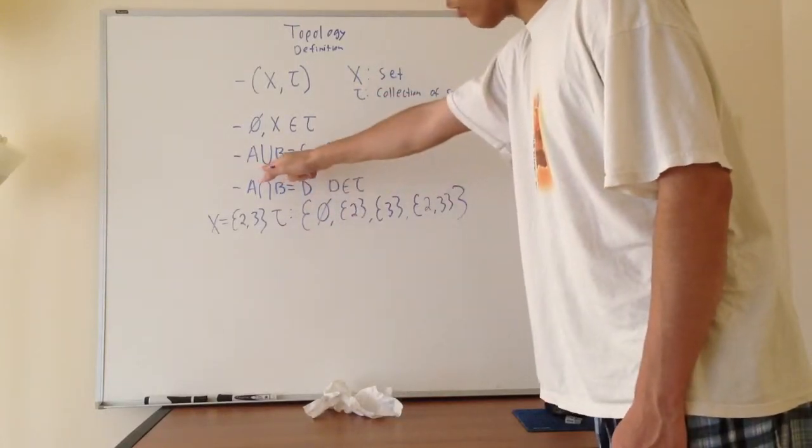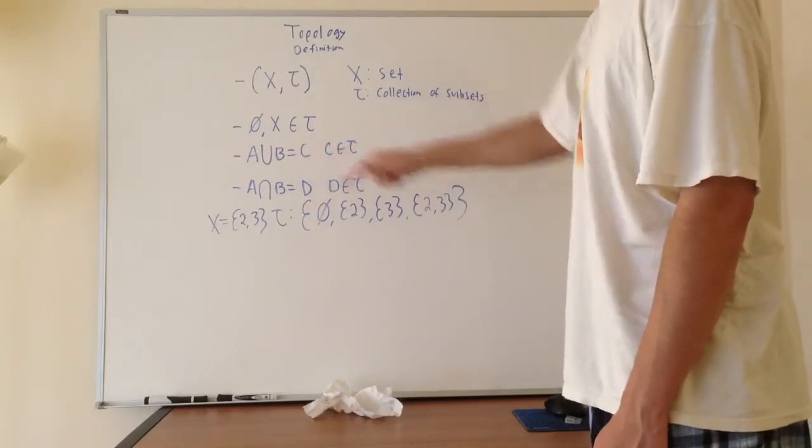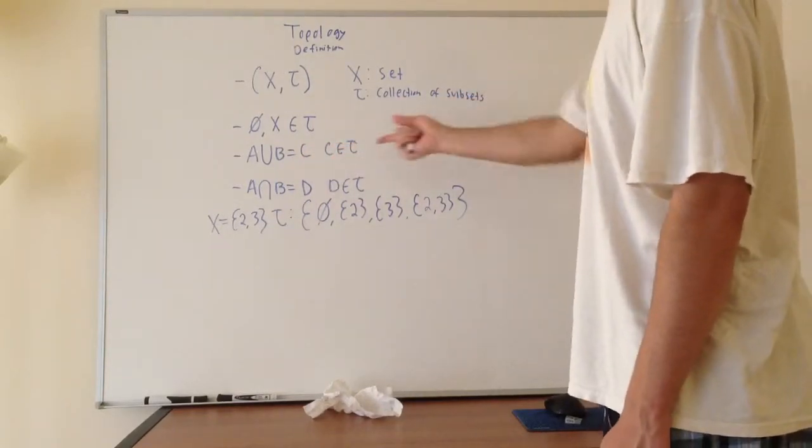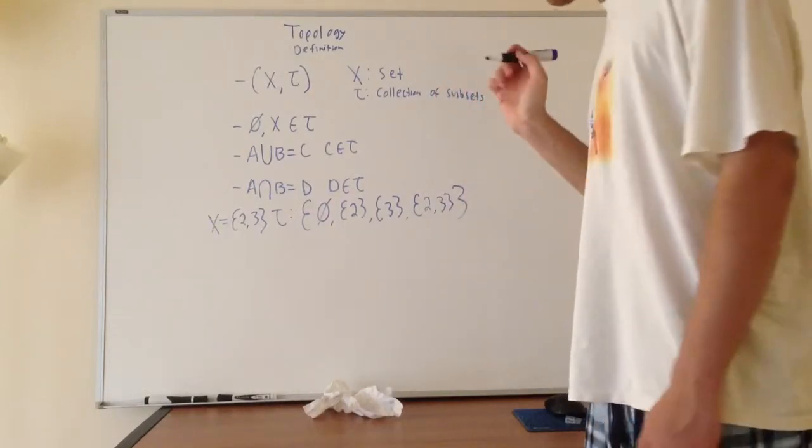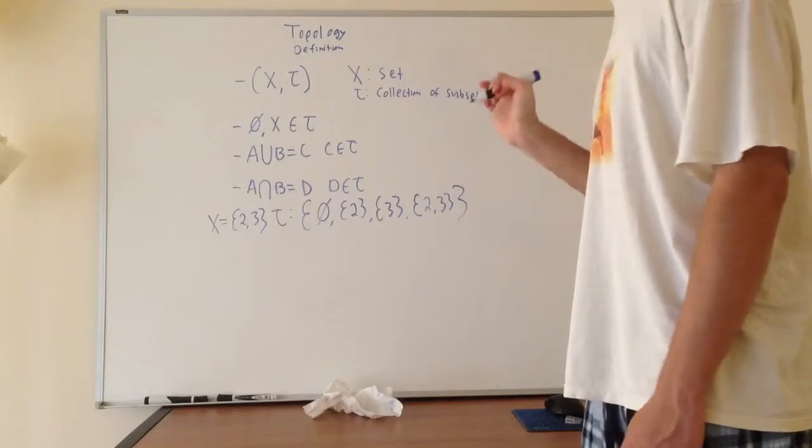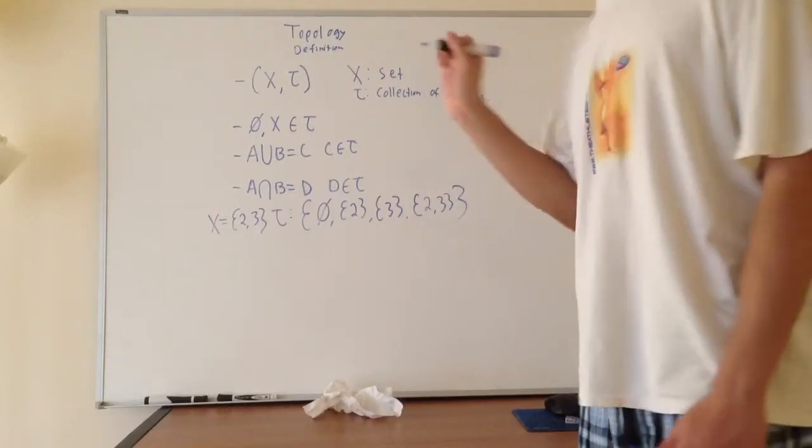Also, if you have a union of A and B and you get a set C, that new set is also included in the family of subsets. And actually, any time you take even an infinite union, any time you take a union of any collection of subsets, that union is also included in tau.